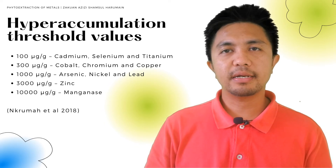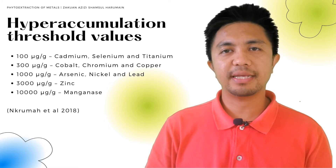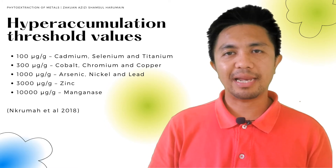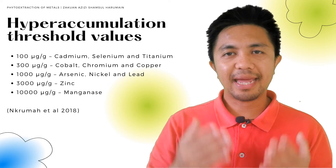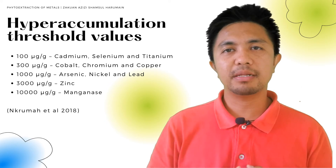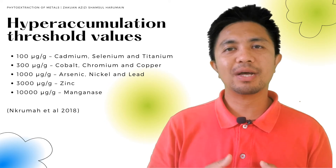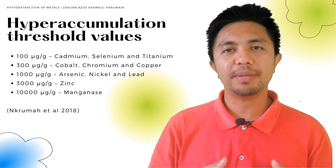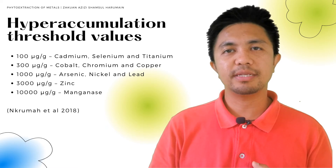For example, in order for a plant to be classified as an arsenic, nickel or lead hyper accumulator, it has to be able to accumulate at least 1,000 micrograms per gram of metals in its above-ground tissues.